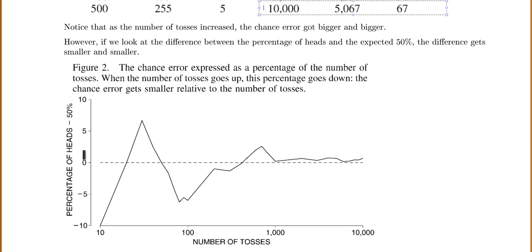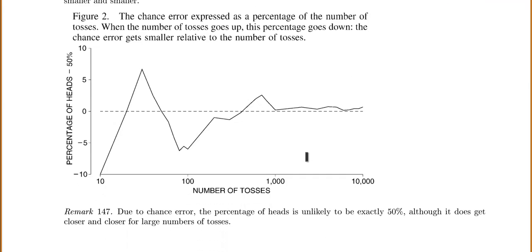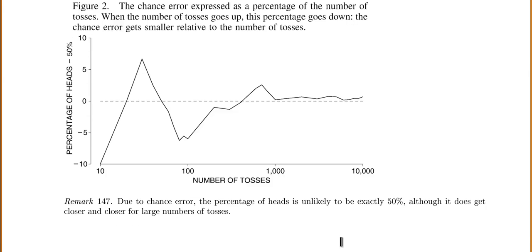This graph shows the difference between the percentage of heads and 50%, which is what was expected. Notice it was bigger at the beginning, but as the number of tosses went up, that percentage got smaller and smaller. As a final remark, due to chance error, the percentage of heads is unlikely to be exactly 50%, although it does get closer and closer for a large number of tosses.